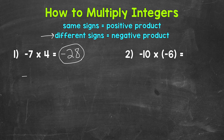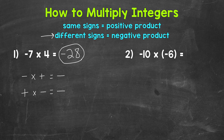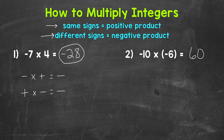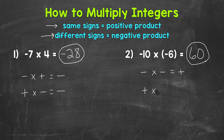So if we have a negative times a positive, or a positive times a negative, that will equal a negative product. Let's move on to number 2 where we have negative 10 times negative 6. We have the same signs — two negative numbers — so our product will be positive. 10 times 6 is 60, and since we have the same signs, this is going to be positive 60. To recap, same signs equals a positive product: negative times a negative equals a positive, and a positive times a positive also equals a positive.